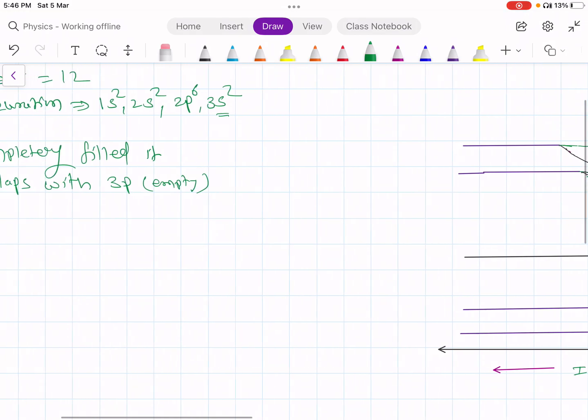Let us consider these energy levels of the magnesium atom. This is 1s which is completely filled. This one is 2s, also completely filled. This is 2p, completely filled. 6 electrons are there. And this one is 3s, also completely filled. This one is 3p which is empty. So this is the case for individual atoms when atoms are separated by a distance infinity.